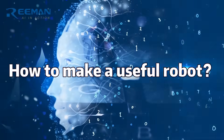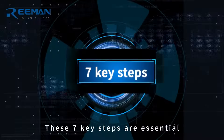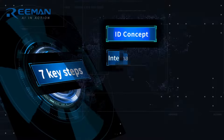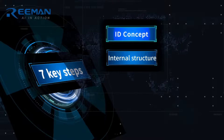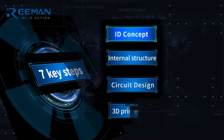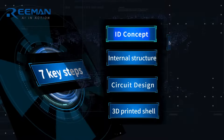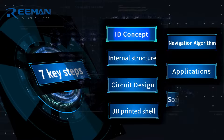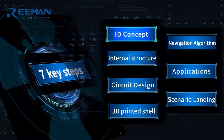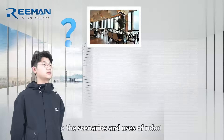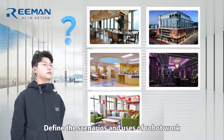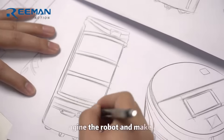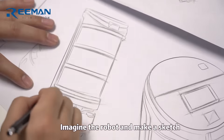How to make a useful robot: these 7 steps are essential — ID concept, internal structure, circuit design, 3D printed shell, navigation algorithm, application scenario. First, define the scenarios and uses of the robot's work, imagine the robot, and make a sketch showing the general outline of the robot.